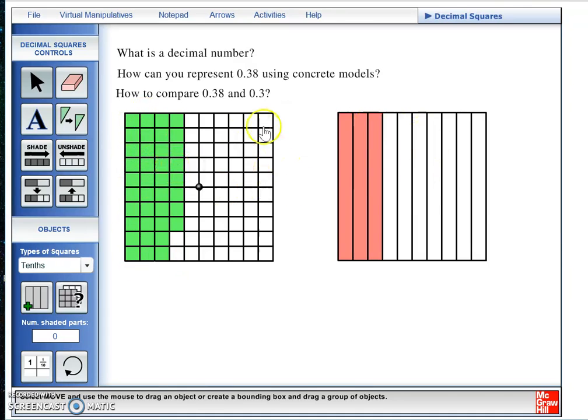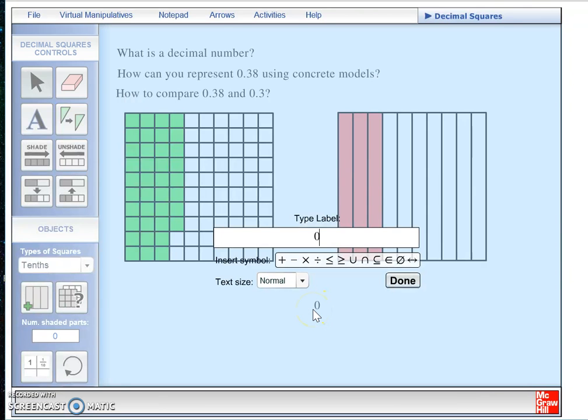So seeing that between our two representations, we can say that 38 hundredths is greater than 3 tenths.